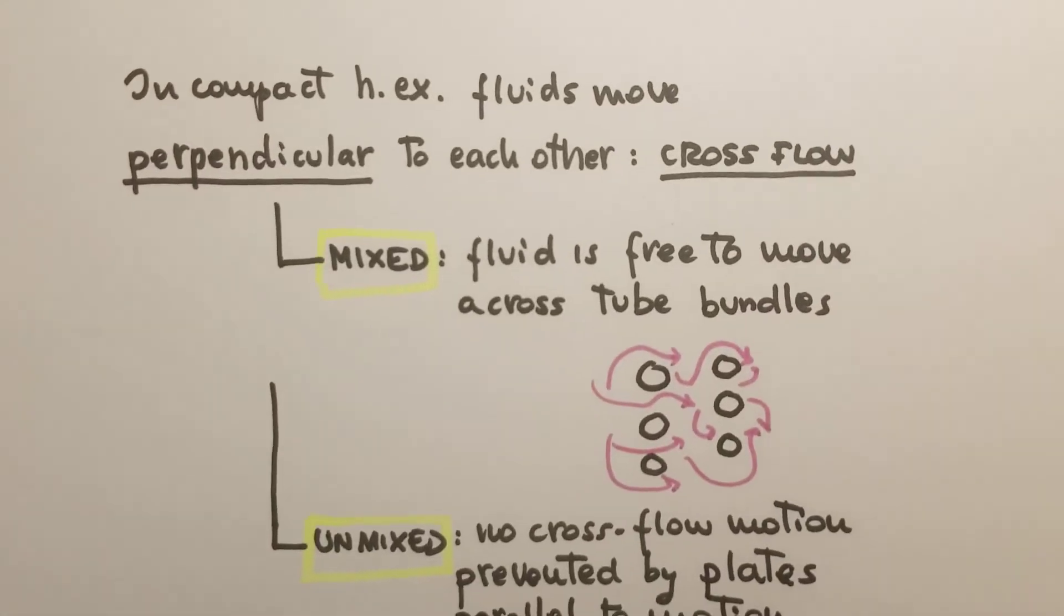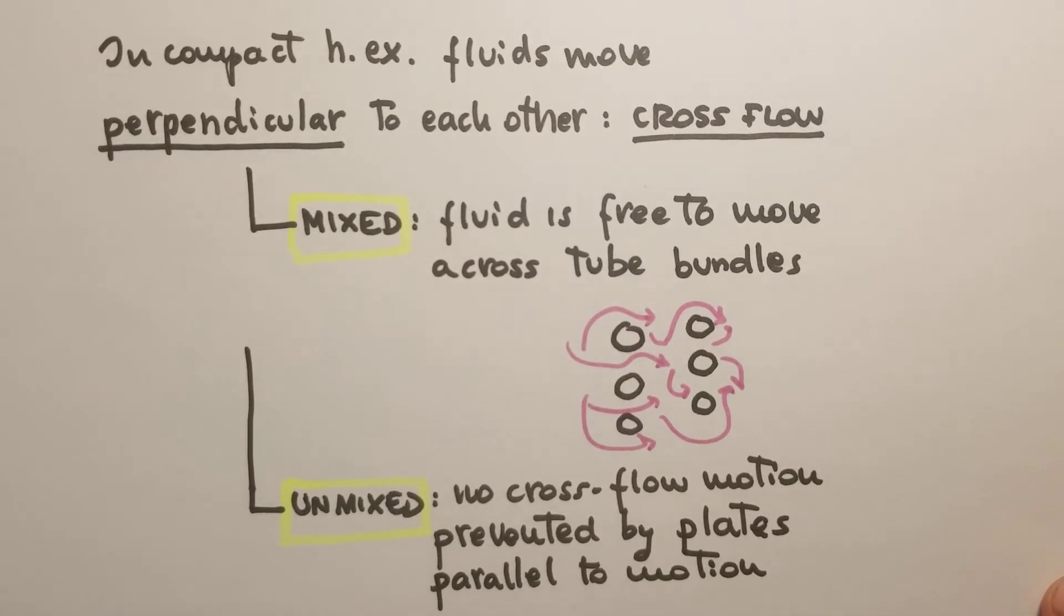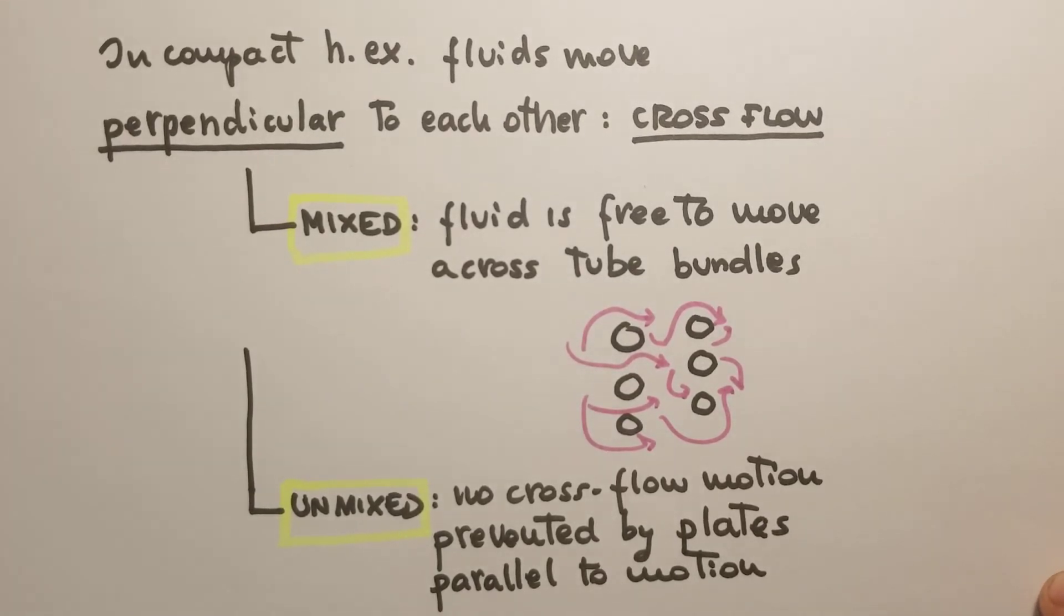Another group of heat exchangers that's very common in engineering is called cross-flow heat exchangers, where the fluids move in directions that are perpendicular to each other. Within the cross-flow group, we can define mixed heat exchangers where the fluid is free to move across bundles. Instead, we can have an unmixed situation where there is no cross-flow motion because the motion in the span-wise direction is prevented by plates that are parallel to the motion of the fluid.